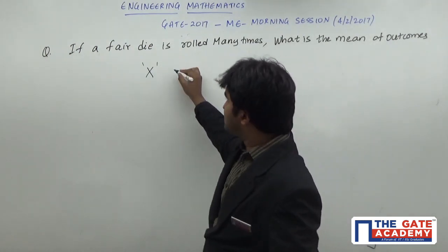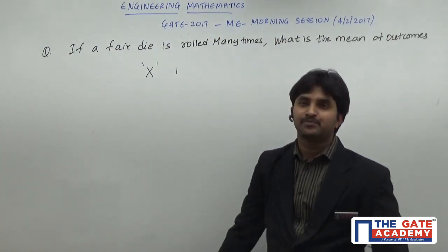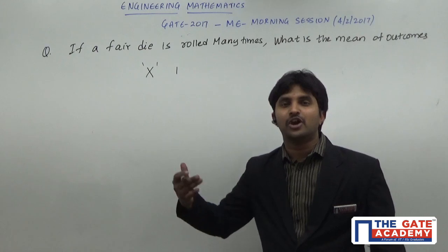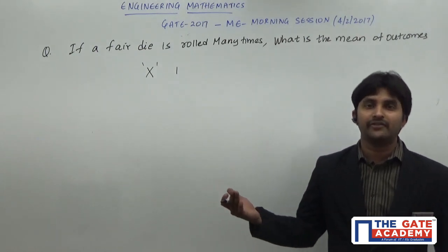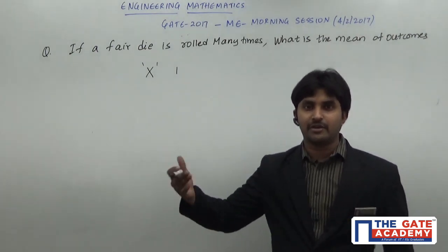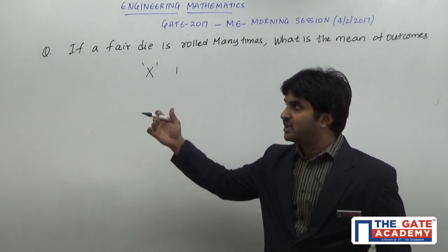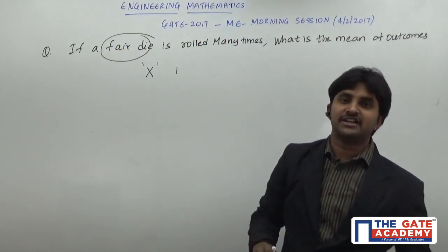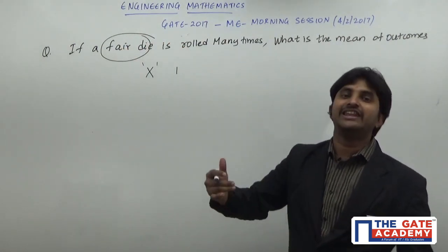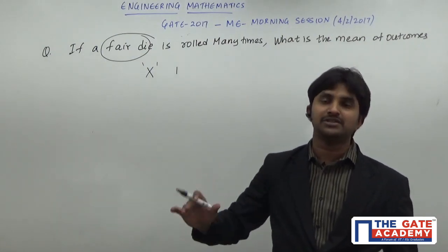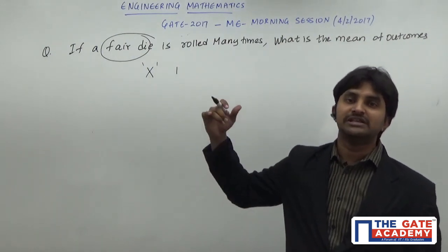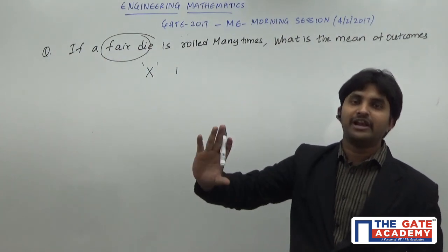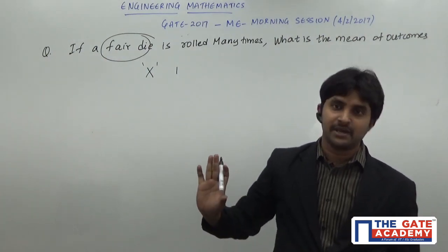Now if I consider rolling it one time, then how many outcomes am I going to have? The outcome can be anything — it can be 1, 2, or 3. It is already given that it is a fair die. When it is mentioned that it is a fair die, the probability of any outcome is equal to 1/6, because it is going to be a six-faced die with 6 faces. So the probability of any outcome is going to be 1/6.